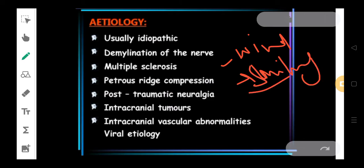These are some of the main reasons that could be etiological factors. Other than that, demyelination of the nerves, multiple sclerosis, petrous ridge compression, post-traumatic neuralgia, intracranial tumors and at times the reason could be diabetes mellitus also. These are some of the etiological factors we come across.